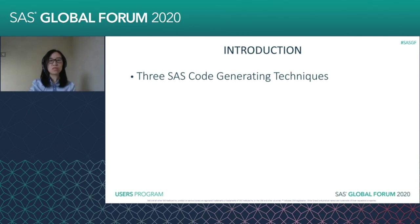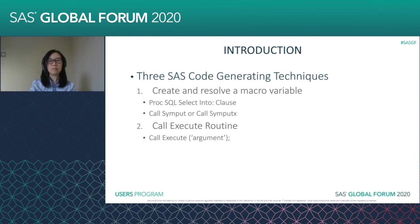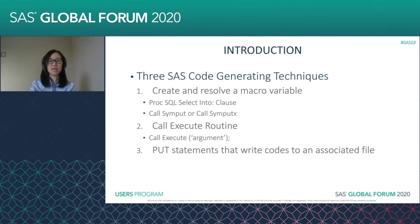The three SAS code generators we are going to talk about are: first, we can create and resolve a macro variable. It doesn't really matter which method you use to generate a macro variable — you can use the PROC SQL select into clause, or if you prefer, also the CALL SYMPUT. The second technique is the CALL EXECUTE routine. The syntax is very simple. The argument in the syntax can be any SAS code or any variable from a SAS dataset.